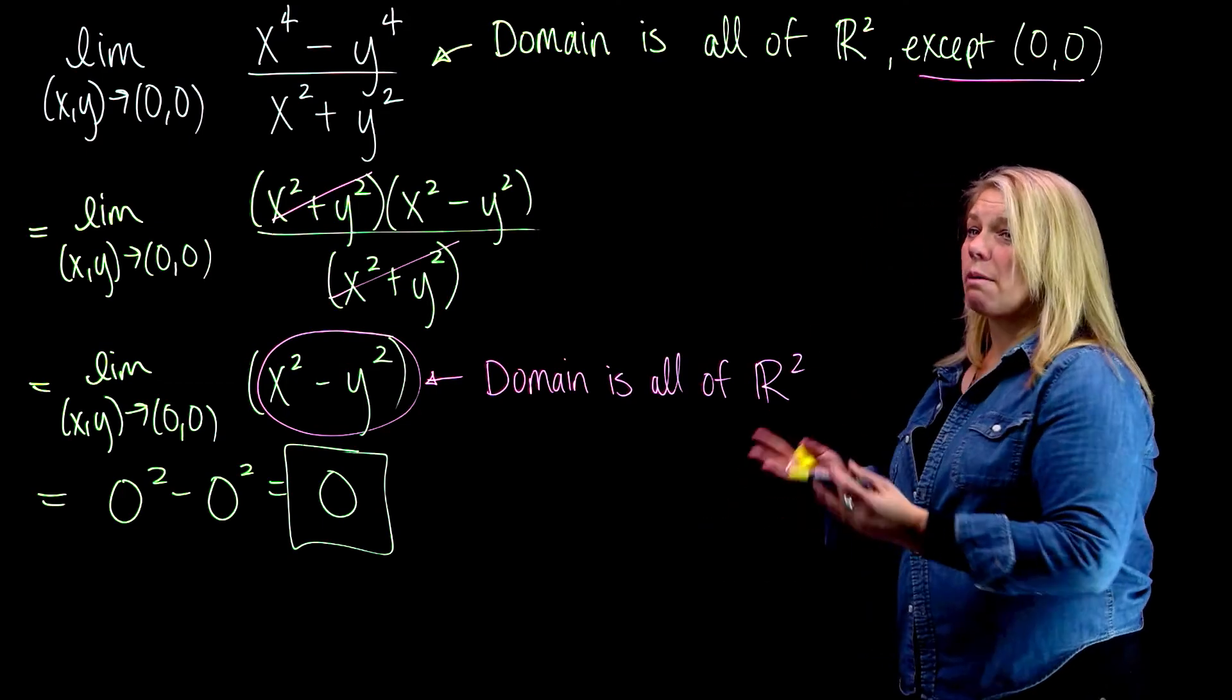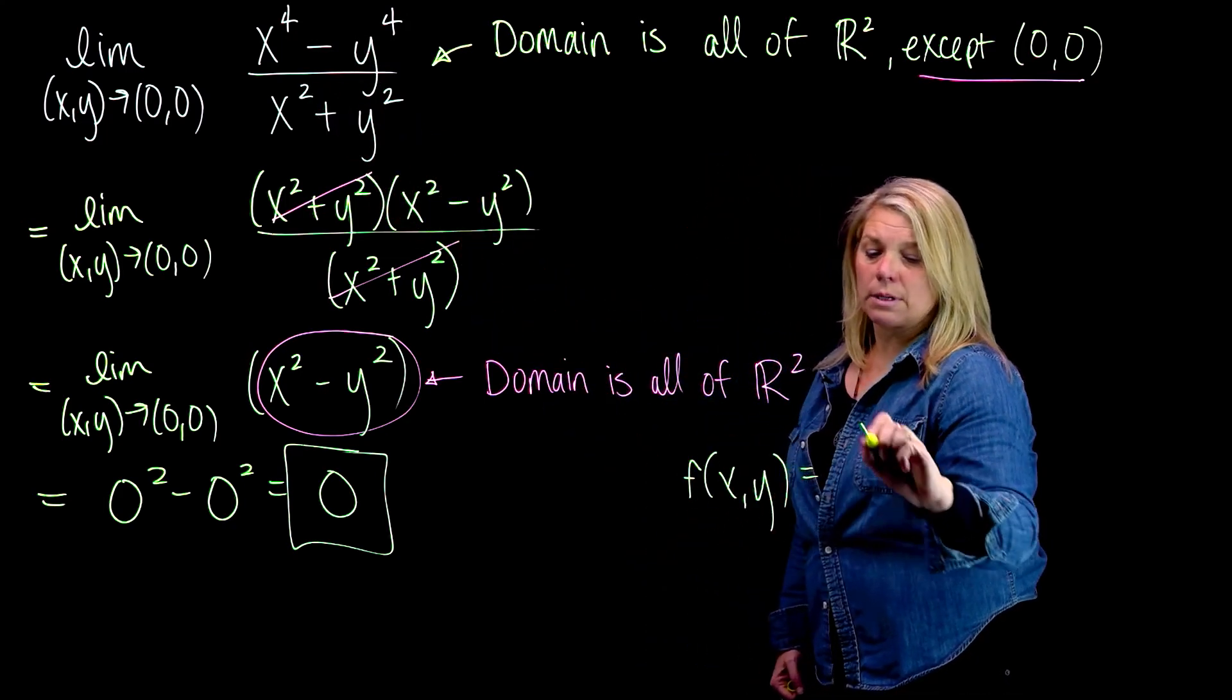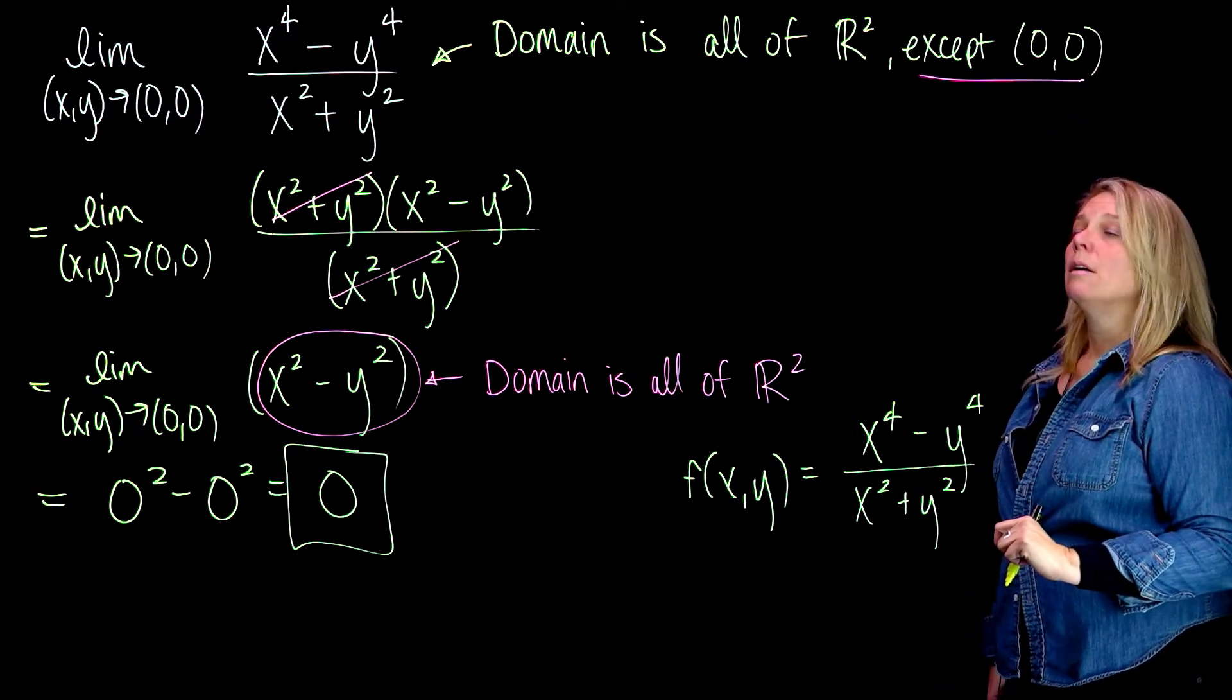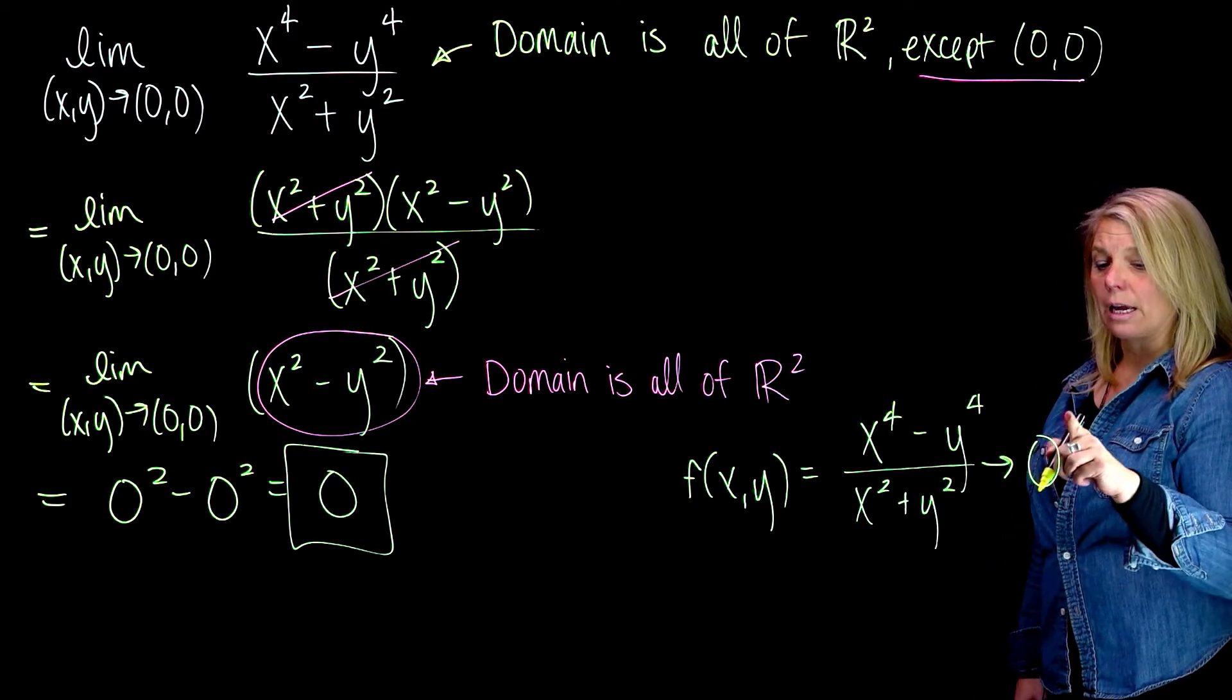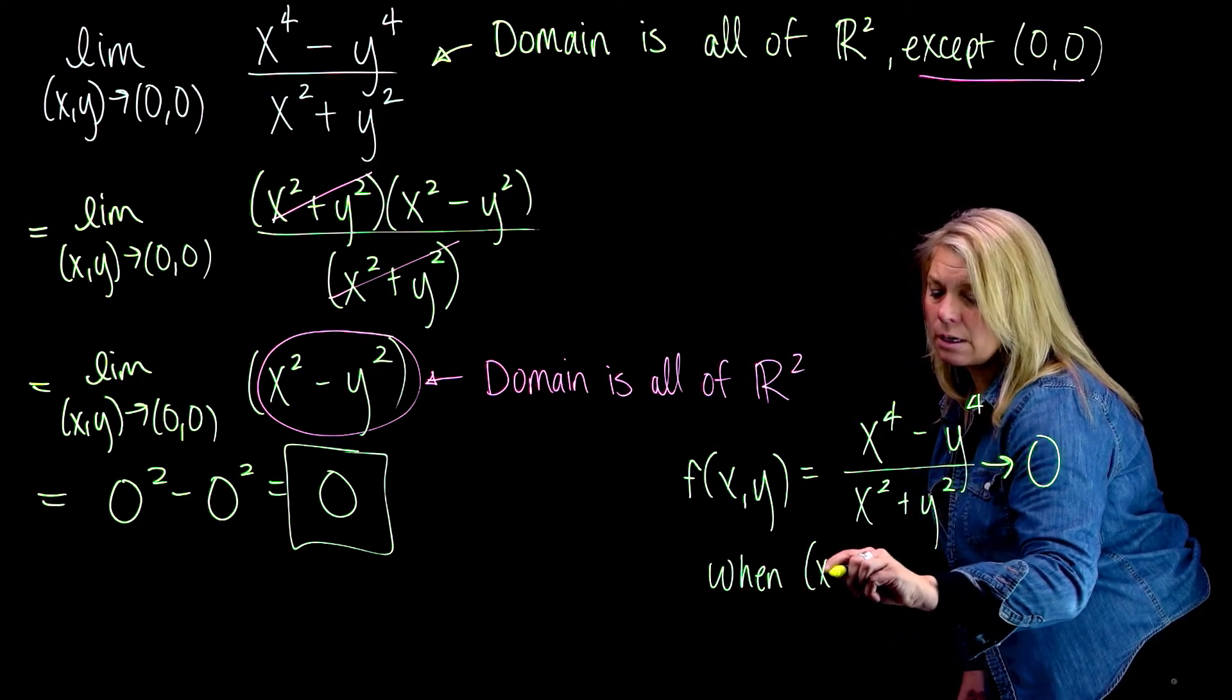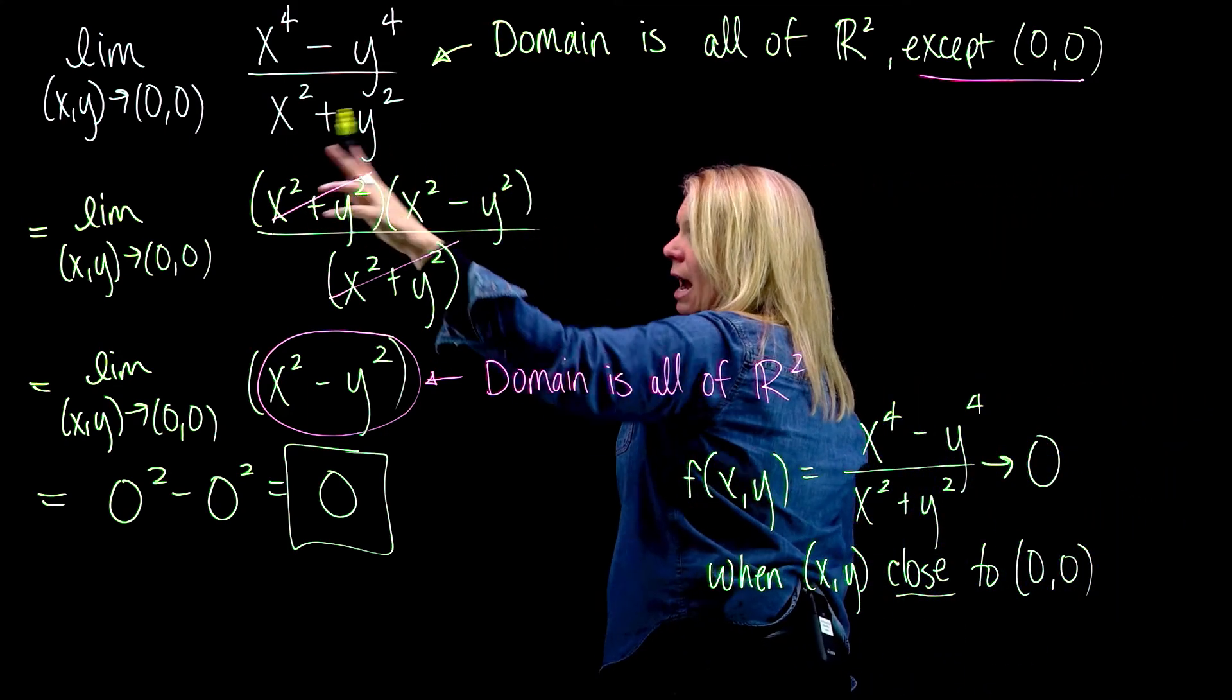We want to not only be able to get the answer, but be sure we're clear that we understand what that answer means. We're going to look at a graph of the function in just a second. I want to emphasize this original function f(x,y) equals x⁴ - y⁴ over x² + y² does not have a point at the origin. (0,0) is not in the domain of that function. But what this limit tells us is that this function gets close to zero, the outputs get close to zero, when our input is close to the origin. The outputs of this function are close to zero when the inputs, the points, are close to the origin. There is no actual point at the origin for this function because that point is not in the domain of the original function.